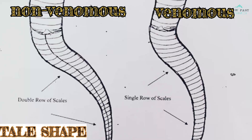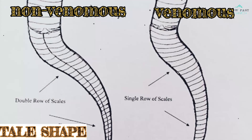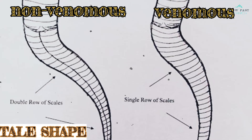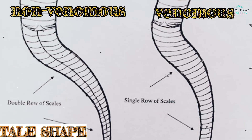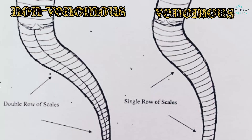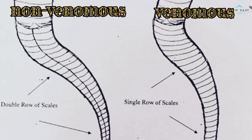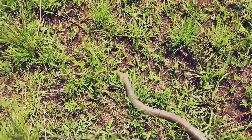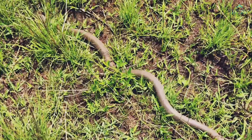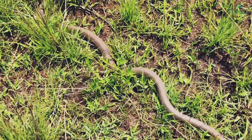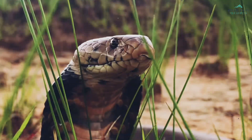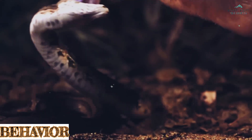Tail shape is another distinguishing feature. Venomous snakes often have whip-like tails that taper sharply toward the end, designed for swift movements and accurate strikes. Non-venomous snakes, on the other hand, tend to have thicker, more robust tails resembling hammers or clubs, which provide added protection rather than speed.